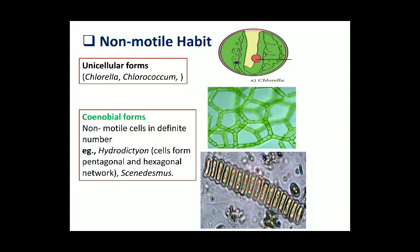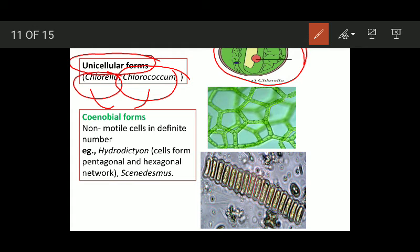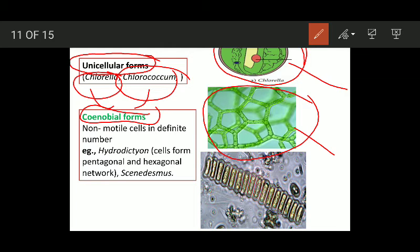Now, non-motile habit. First we have unicellular forms — examples include Chlorella and Chlorococcus. These unicellular forms lack flagella. We also have coenobial forms here; coenobium is still a colony of cells with fixed number, shape, and arrangement, but in this case the individual cells lack flagella. Examples are Hydrodictyon and Staurodesmous. Hydrodictyon forms pentagonal or hexagonal networks.